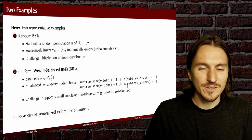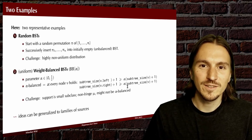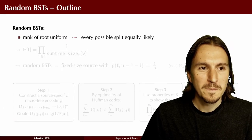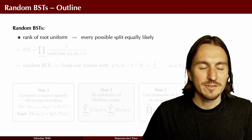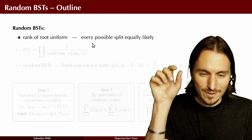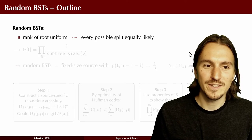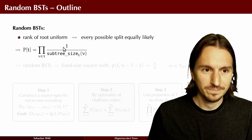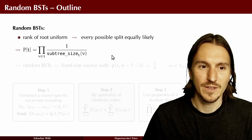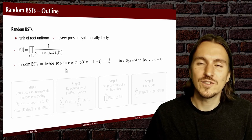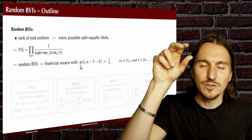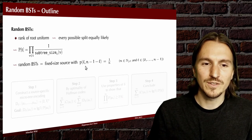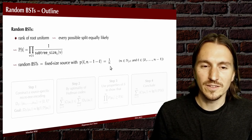The two examples are chosen to illustrate the key steps needed to analyze all the other sources and show the key obstacles to overcome. Random binary search trees are characterized by the fact that the first insertion is the first element of a random permutation, so every possible split is equally likely. The probability for the entire tree can be written as a product over all nodes of one over the size of the subtree rooted at that node — this can be written as a fixed-size source where for each node we choose uniformly how many descendants go left and how many go right.